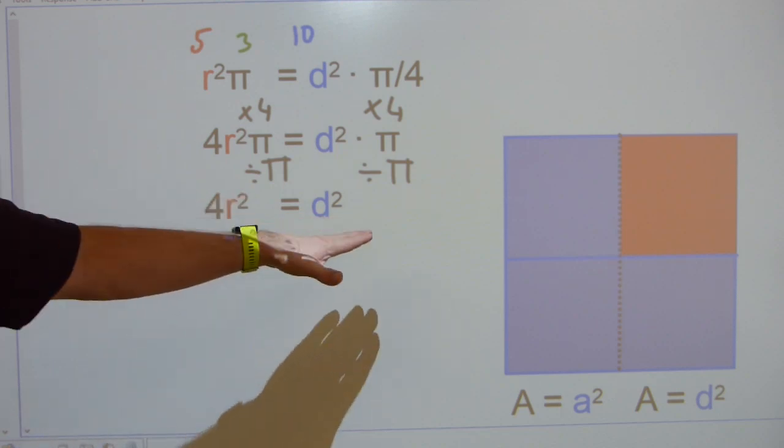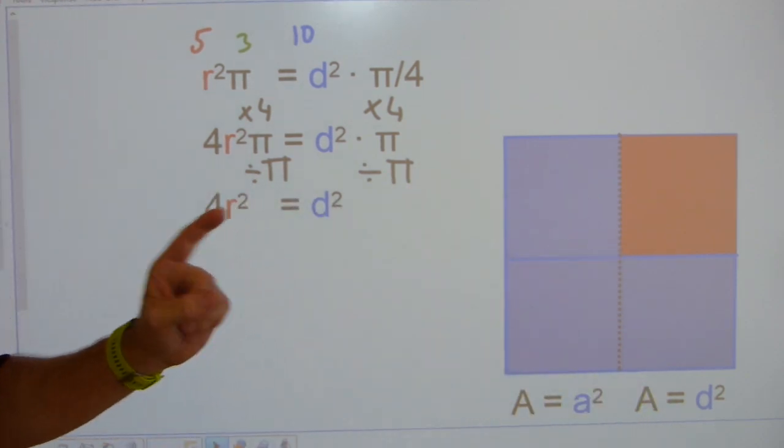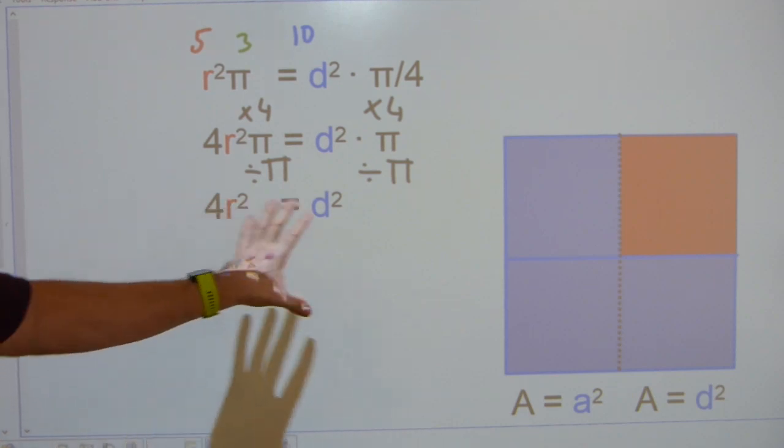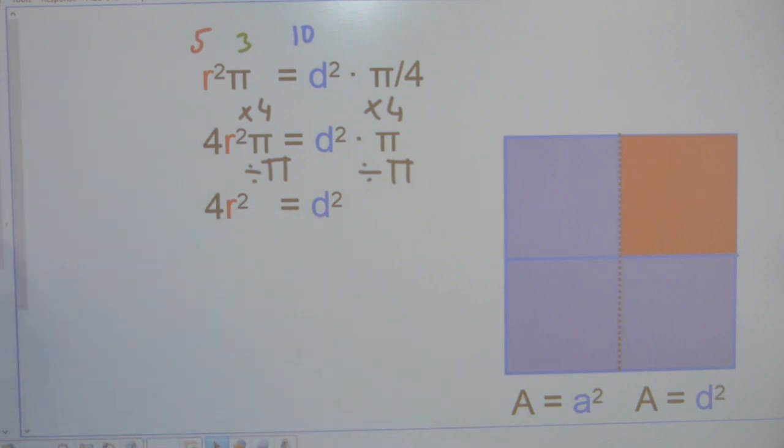At this point, the equation is proven to be true geometrically. But, I can show you algebraically to end up with two equal sides, or two identical sides of this equation, and it's fairly straightforward. Let me just show you.